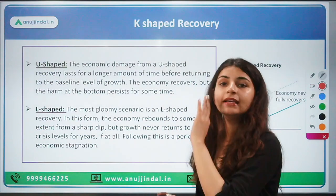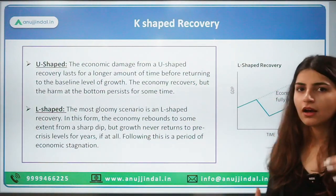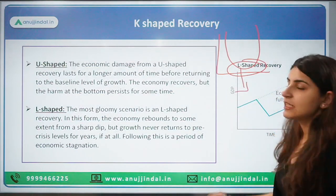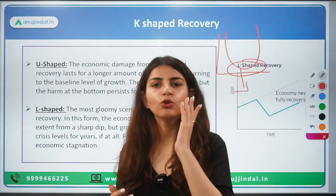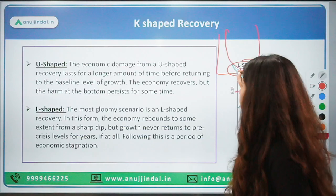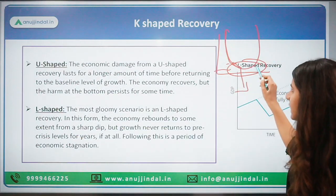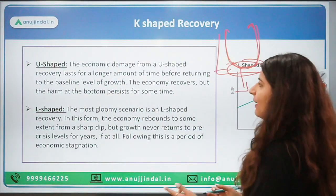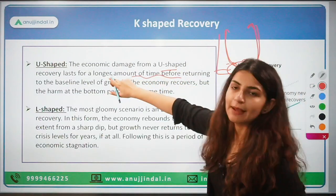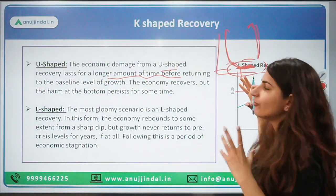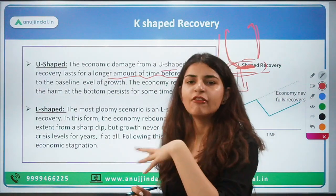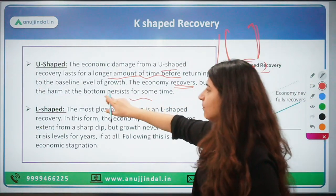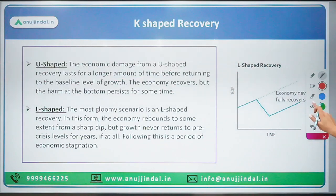Similarly, there is a U-shaped curve, and there is a difference between the V-shaped and U-shaped curves. In a U-shaped curve, the low phase remains for a certain amount of time — the economy takes a little time to recover. Growth falls, reaches the lowest, stays at the lowest for a while, and then grows. The economic damage from a U-shaped recovery lasts for a longer amount of time than a V-shaped curve, where the recovery was sudden.